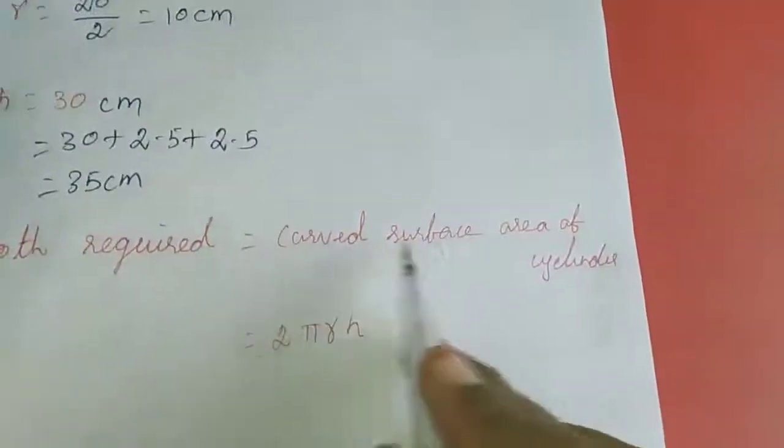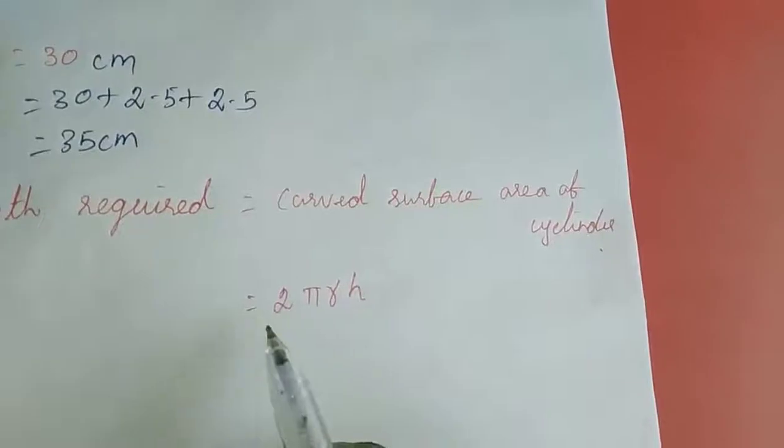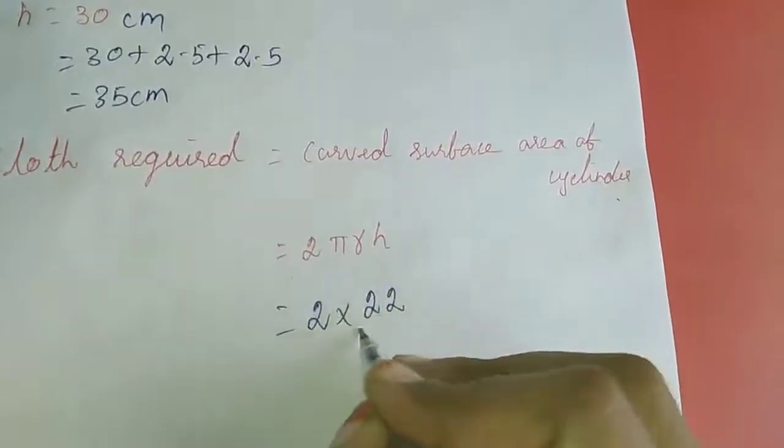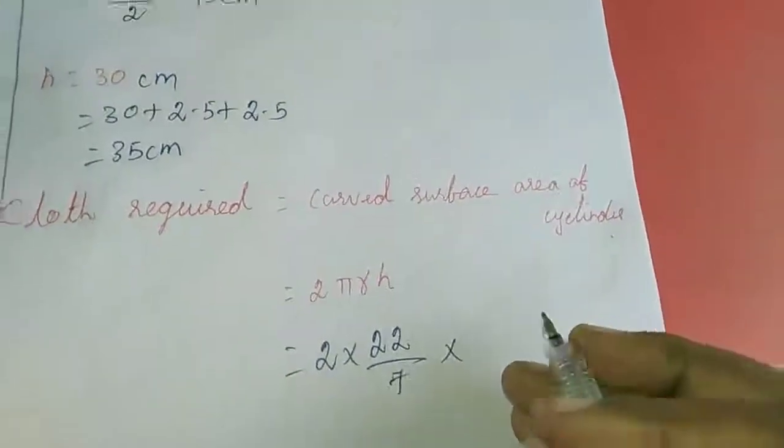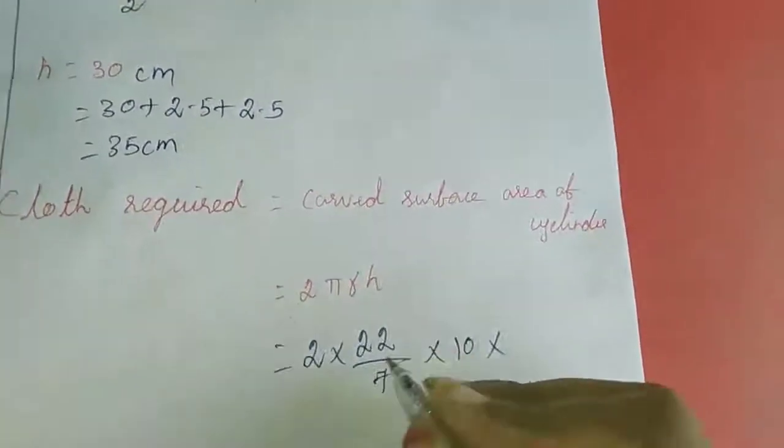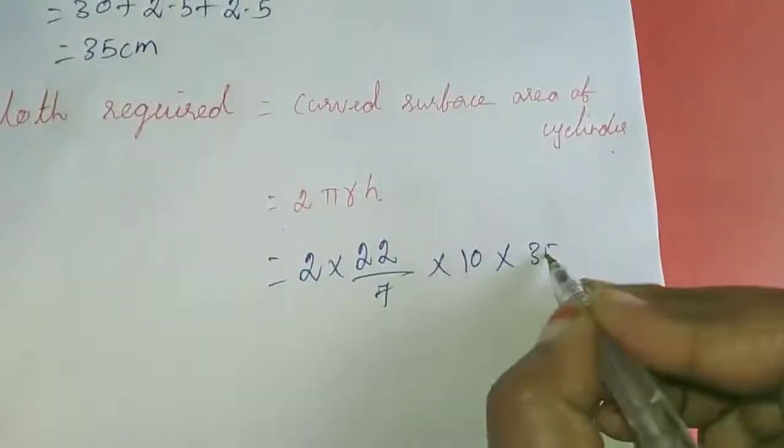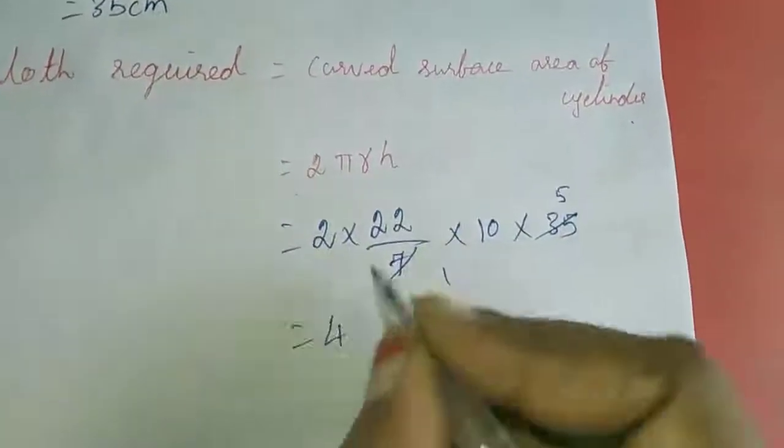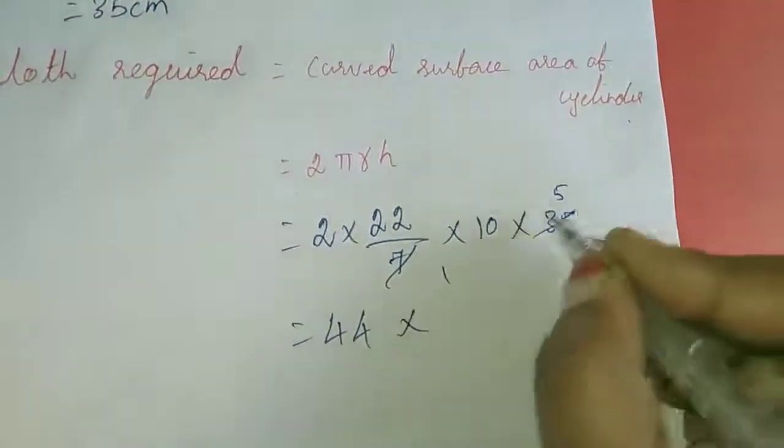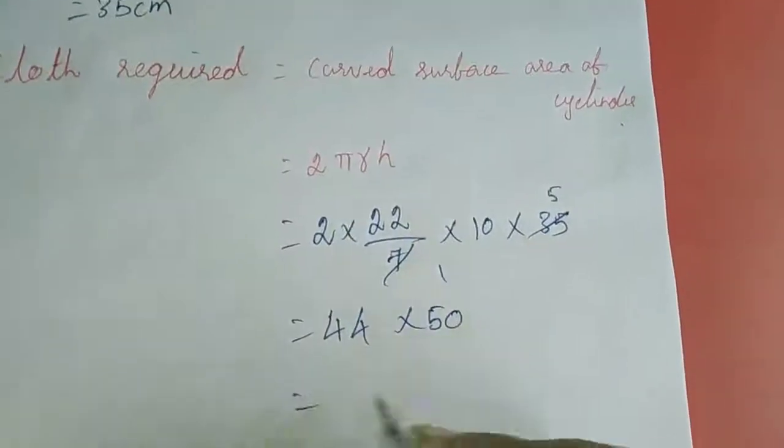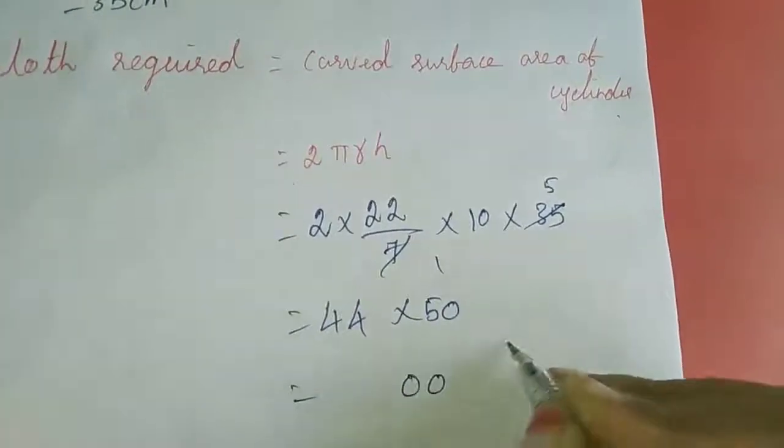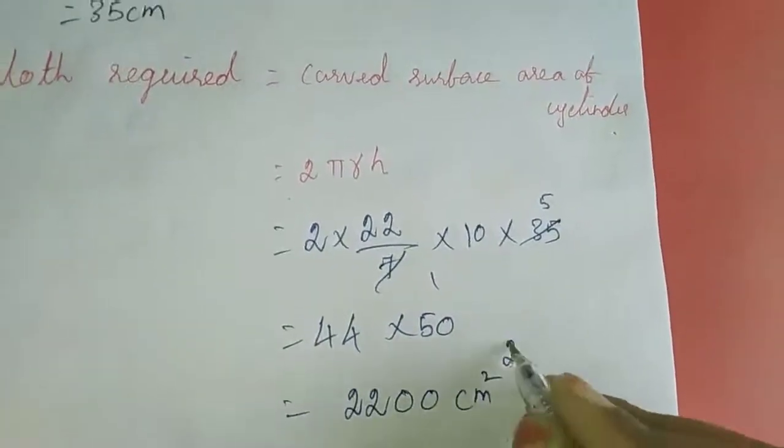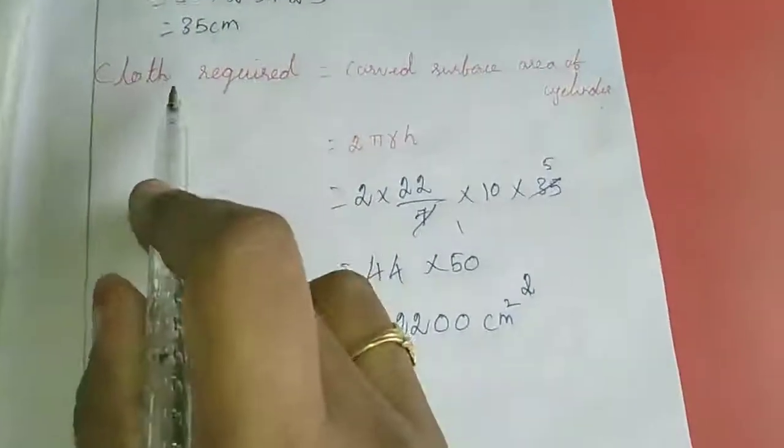The cloth required is the curved surface area of a cylinder. The formula is 2πRH. So 2 into π is 22 by 7, for R 10 cm, for H 35. This equals 2200 cm squared. So the cloth required is 2200 cm squared.